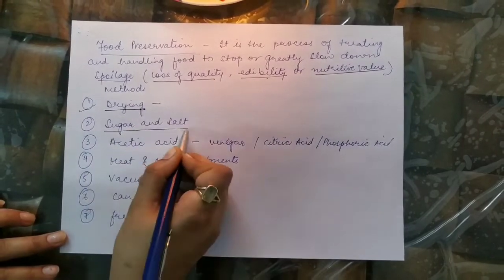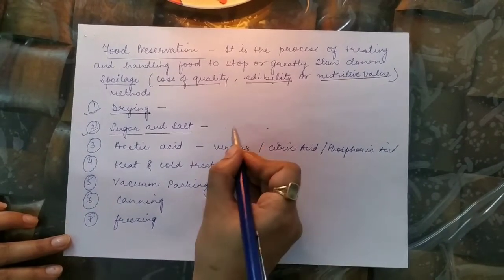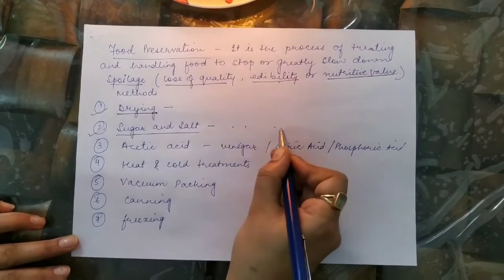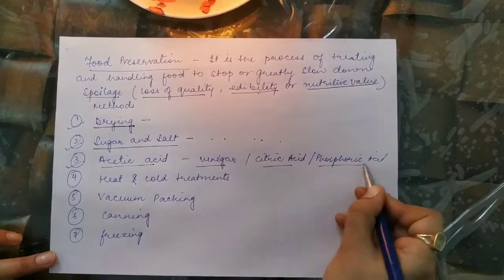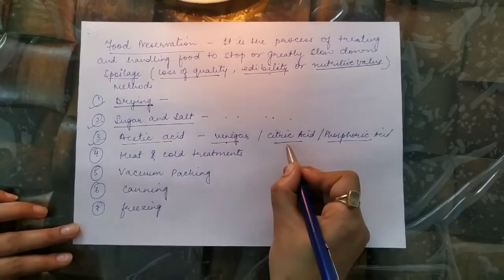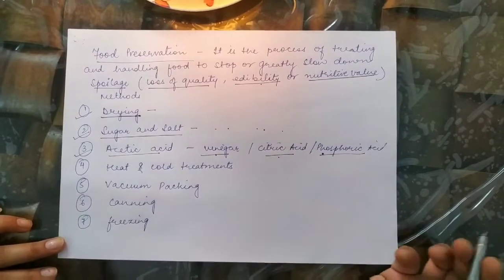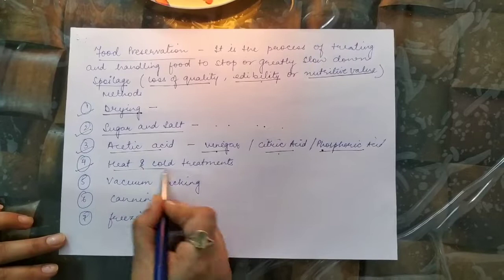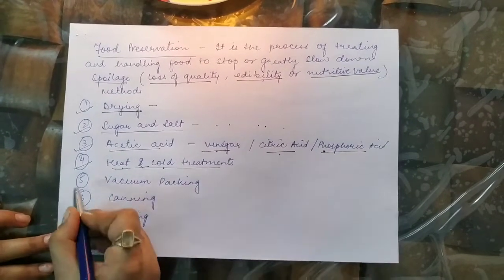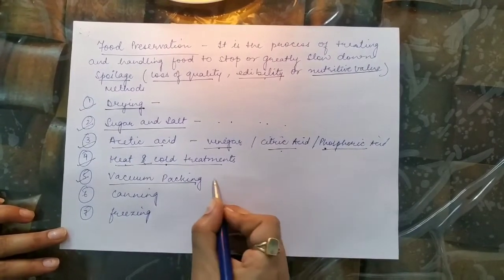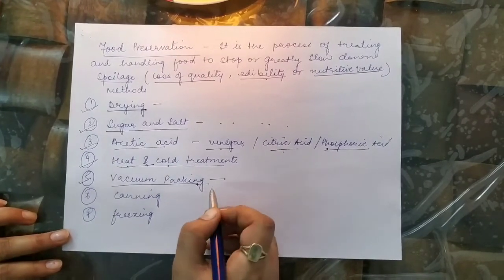Sugar and salt are used in preservation — pickles made in summer can last two to three years, and jams and jellies are preserved this way. Acids like acetic acid, vinegar, citric acid, and phosphoric acid are used to store vegetables and in cold drinks. Heat and cold treatment can maintain food for longer periods. Vacuum packing, used for chips and biscuits, also reduces spoilage by microorganisms.